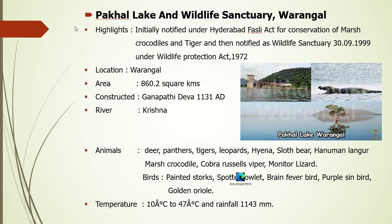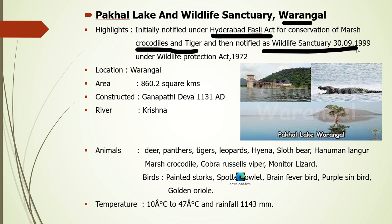The highlights: initially it was notified under the Hyderabad Fursley Act. The main purpose is to protect crocodiles and tigers. When was it notified as a wildlife sanctuary? That is 1999, under the Wildlife Protection Act 1972. Its area is 860.2 square kilometers. It was constructed by Ganapati Deva in 1131 AD — which is also an important history question. The Krishna River flows through it. Crocodiles, deer, panthers, tigers, leopards, and various other animals can be found here.